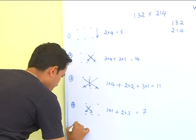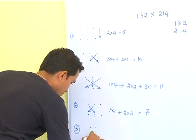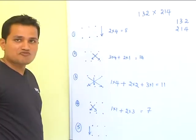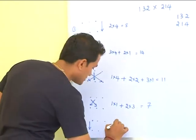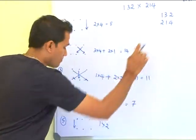Now, the final step. You multiply the first digit of the two numbers. That is, 1 into 2 is 2.